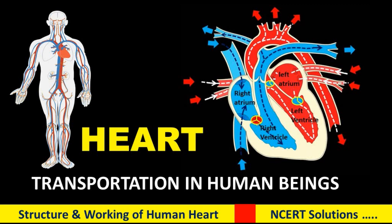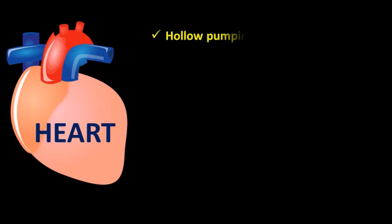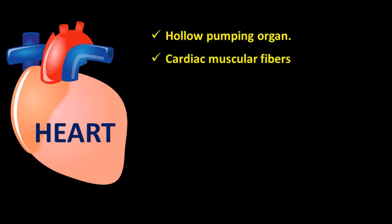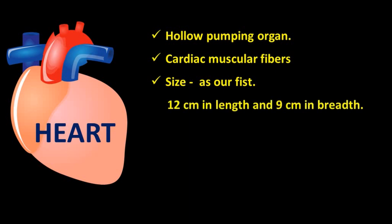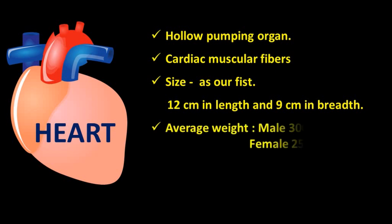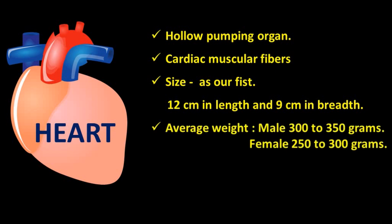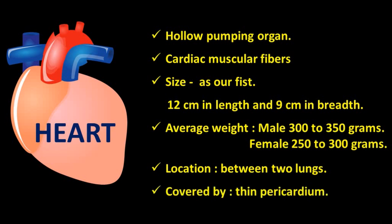Human heart is a hollow pumping organ of the body. It is made up of cardiac muscular fibers. The size of the human heart is as big as our fist. Heart is about 12 cm in length and 9 cm in breadth. Its average weight is about 300 to 350 grams in male and 250 to 300 grams in female. Heart is located between two lungs in the thoracic cavity and is covered by a thin two-layered sac called the pericardium.